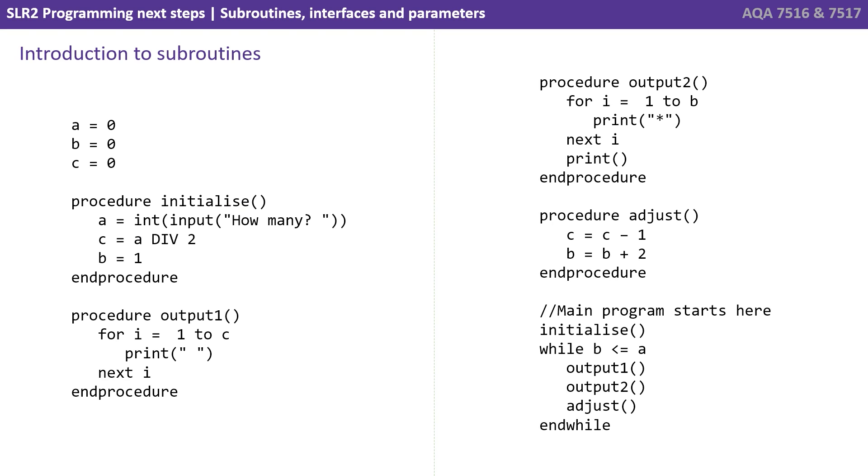So let's inspect a piece of pseudocode here so we can fully understand what subroutines are. We can see there are four subroutines in this program and they're all procedures. Each one is identified by the word procedure followed by a name.